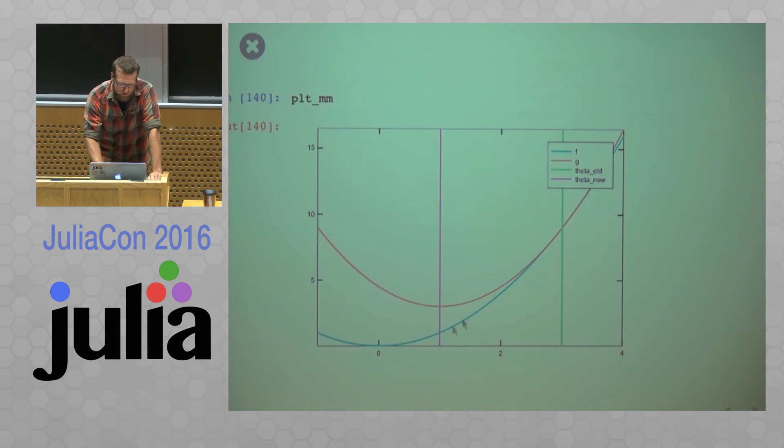And so we can see that by minimizing this red function, we move theta over to this purple line and we're decreasing the objective function. But really, all we've done is find the minimum of some easier function to minimize. So we iterate through this process and we keep moving in the direction of the minimum. And that's kind of the intuition behind MM.